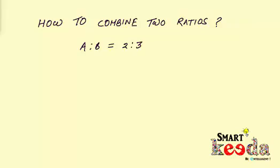The second ratio is B is to C, the terms of which are 4 is to 5. And now we are required to join the link and find the combined ratio A is to B is to C.